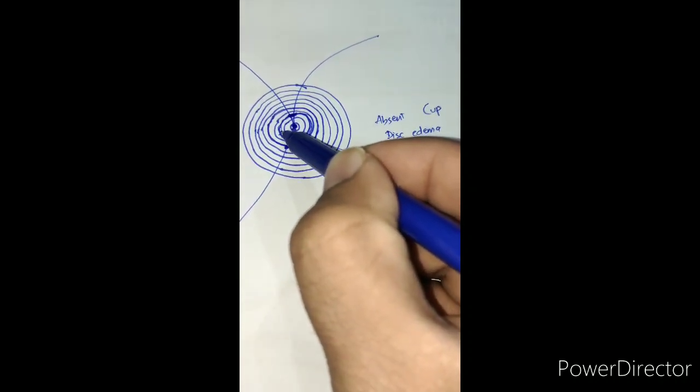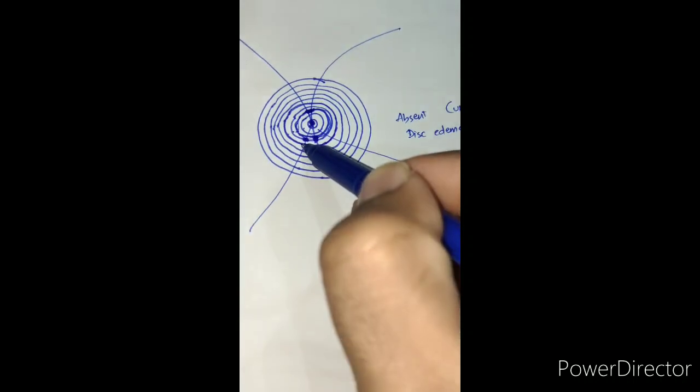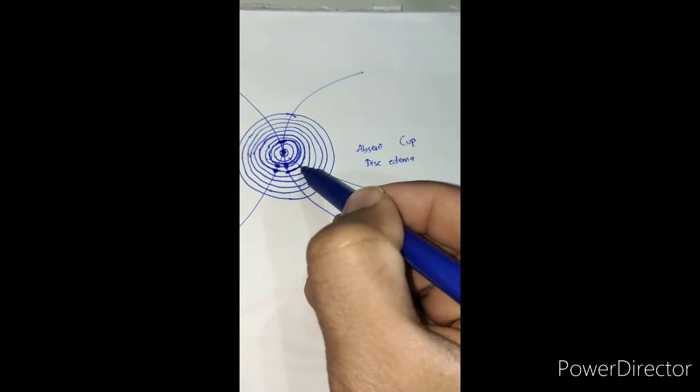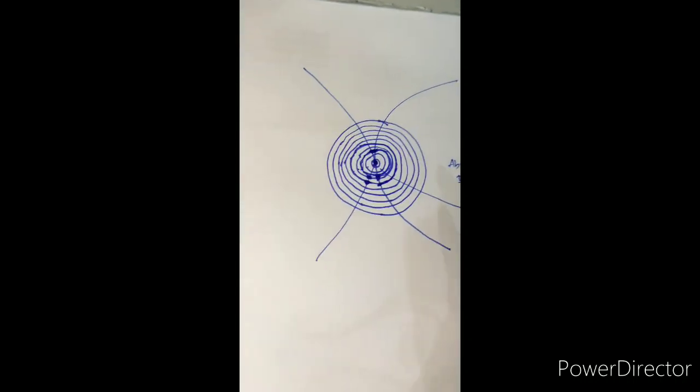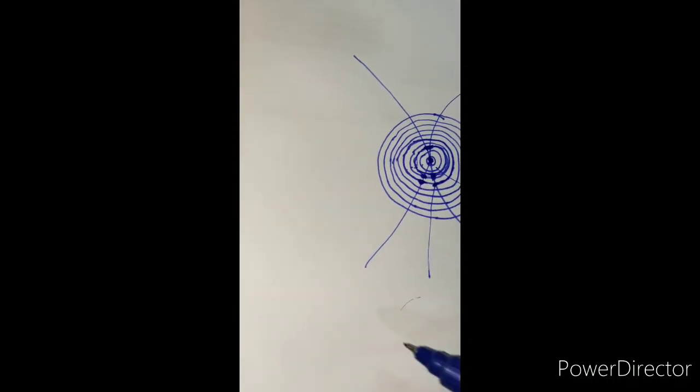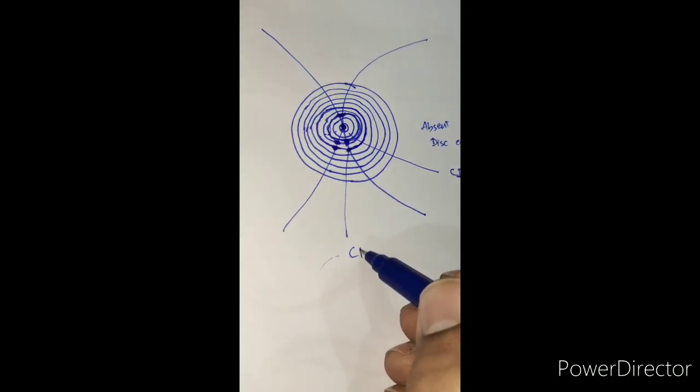So half of the circle is 0.5. If you know maths, half circle is 0.5, so it is a cup-disc ratio of 0.5.